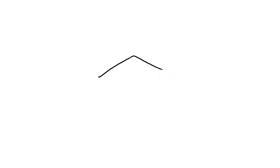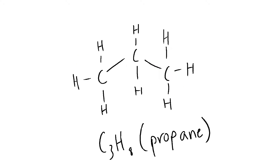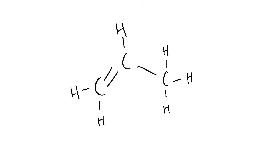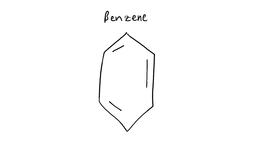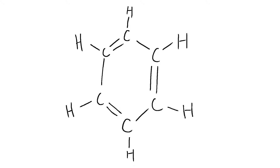Hence, this line represents the compound C3H8, or propane. If we draw another line next to the existing line, this represents a double bond. Carbons are still filled with as many hydrogens as possible. An example is benzene — since each carbon has a single bond and a double bond, only one valence electron is available, so there is one hydrogen per carbon.